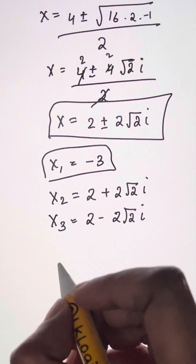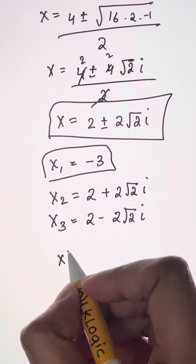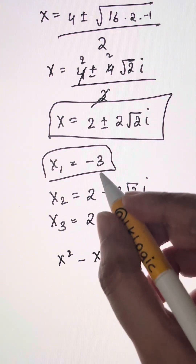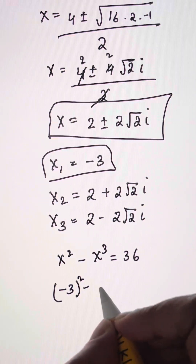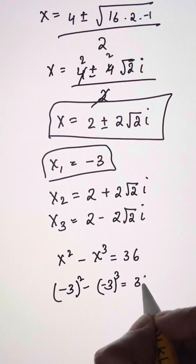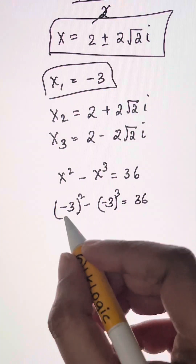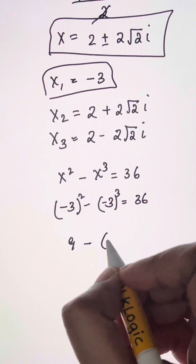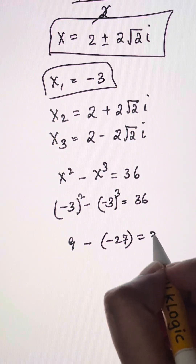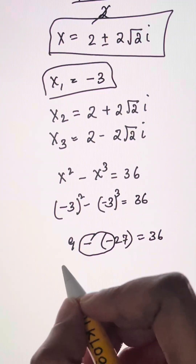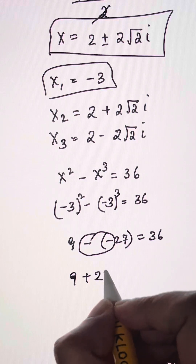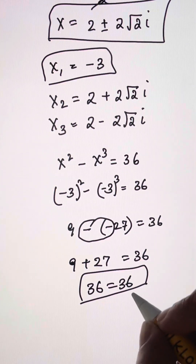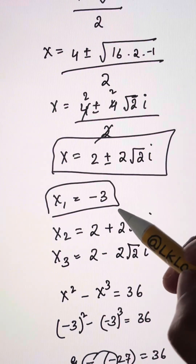Let's put the value into the question: x squared minus x cubed equals 36. Substituting x equals negative 3: negative 3 squared minus negative 3 cubed equals 36. Negative times negative is positive, so 9, minus negative times negative times negative is negative 27. Negative and negative make it positive: 9 plus 27 equals 36. Yes, 36 equals 36, so that value of x satisfies the equation.